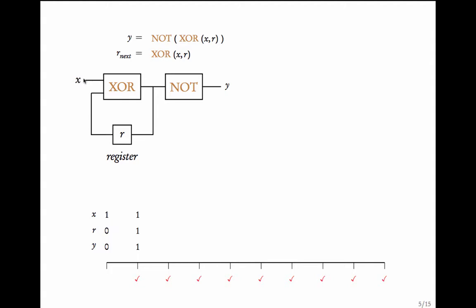Suppose the value of X is 1. XOR of 1 and 1 is 0, and NOT of 0 is 1. The value of R changes to XOR of 1 and 1, which is 0. Now with R equal to 0, suppose X is 0. XOR of 0 and 0 is 0, NOT of 0 is 1, and R changes to XOR of 0 and 0, which is 0. Assuming X is then 1: XOR of 1 and 0 is 1, and NOT of 1 is 0. You can keep doing this.